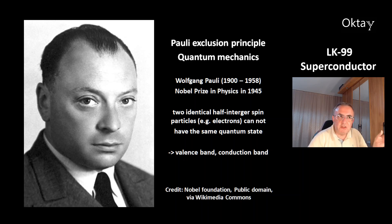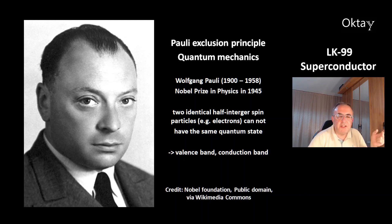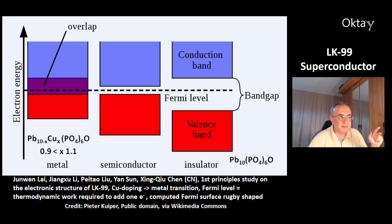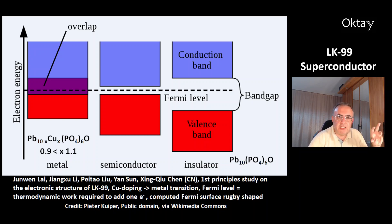One important principle in quantum mechanics is the Pauli exclusion principle, invented by Wolfgang Pauli, who lived from 1900 to 1958 and won the Nobel Prize in Physics in 1945. It states that two identical half-integer spin particles, like electrons, cannot have the same quantum state. The consequence of this principle are band structures — the valence band and the conduction band. Three possible structures are shown: an insulator on the right, a semiconductor with a very small band gap in the middle — which can be modified by doping — and a metal on the left.